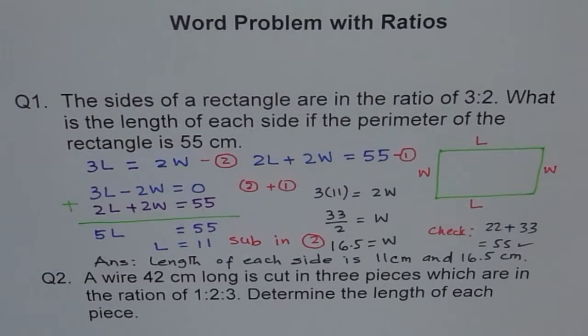Now second problem I will leave for you to do, but I will read it out for you. Please make a note of this. A wire 42 cm long is cut in 3 pieces which are in the ratio of 1 is to 2 is to 3. Determine the length of each piece. This is very similar to the previous, and you can do it with simultaneous equations and you can do it even otherwise using the knowledge of ratios. It is all up to you. Try it out. Thank you.